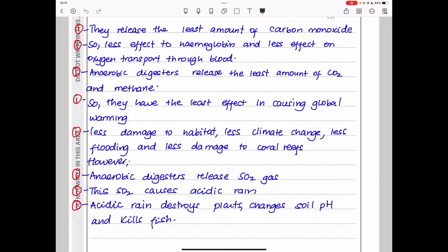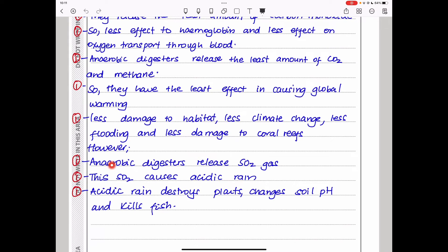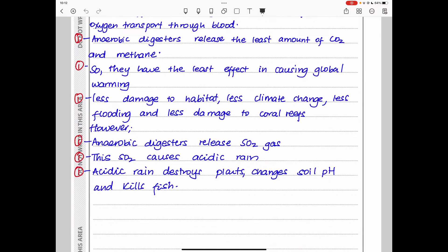However, they released sulfur dioxide. Anaerobic digesters release sulfur dioxide gas and sulfur dioxide causes acid rain because the sulfur dioxide can be converted into sulfuric acid, which reacts with water, producing sulfuric acid. Or it could just be sulfur dioxide reacting with water to produce sulfurous acid. These are acid rains. The acid rains will destroy plants. They will change the pH of the soil and lead to the destruction of some marine life like killing fish and so on.